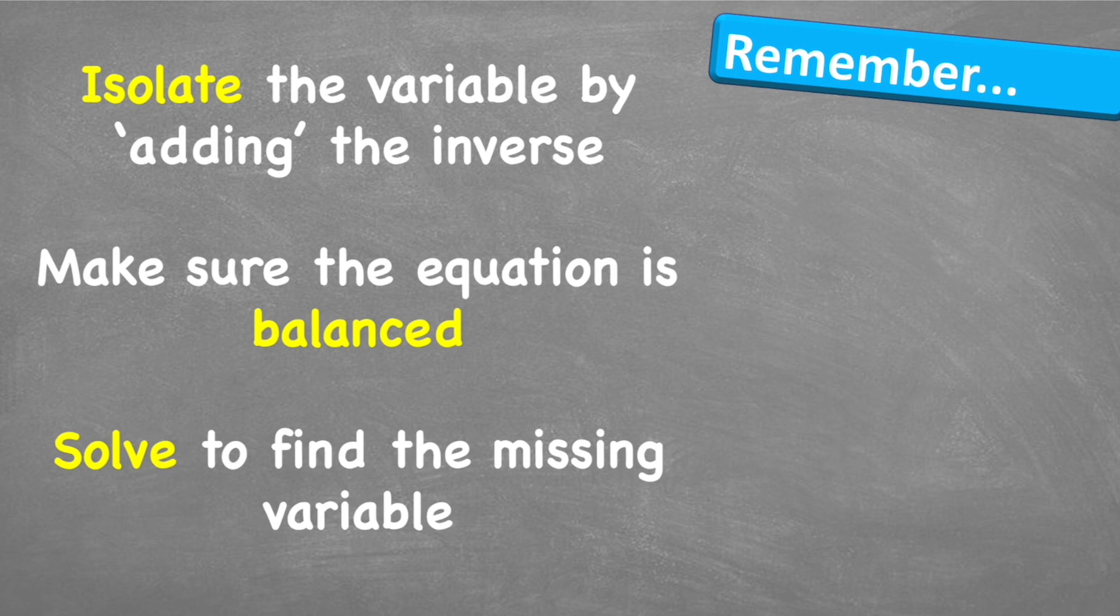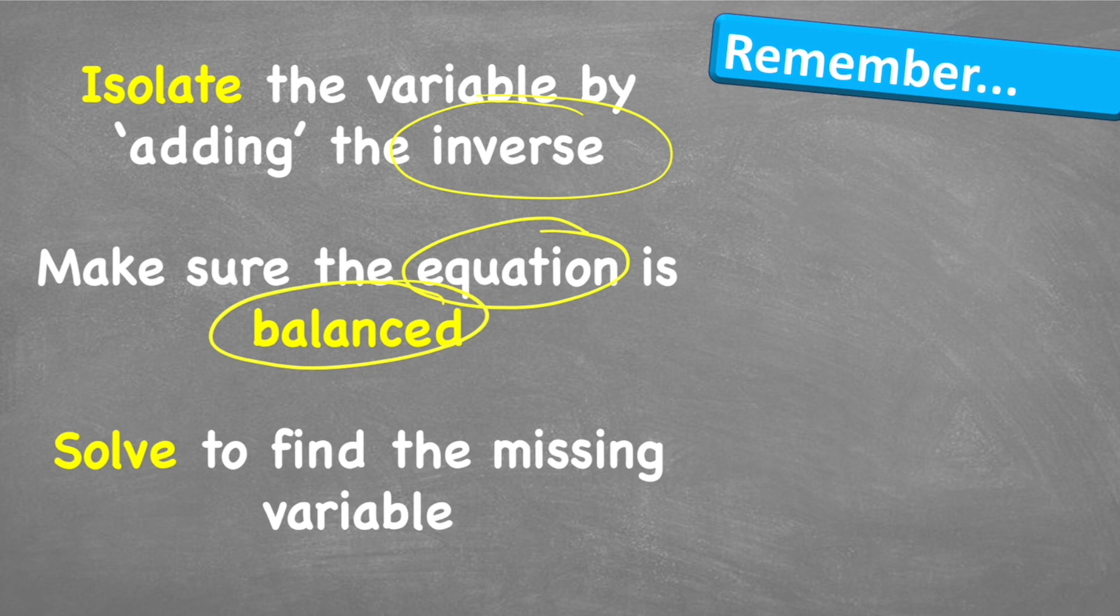And there you go. Let's look at things to remember. First, we need to isolate the variable by adding in or inserting the inverse operation. We need to make sure the equation is balanced by making sure that we put whatever we're doing to one side on both sides of the equation. And then we can simply solve to find the missing variable.